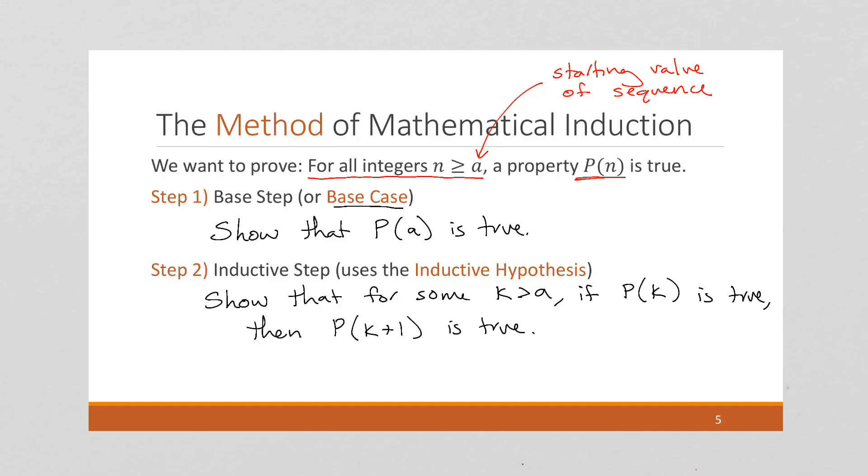And so we're going to say, well, if I pick a random element that I know is within the range that the sequence will cover, I want to show that if it's true, then the next one is true. And we can do this using a direct proof.